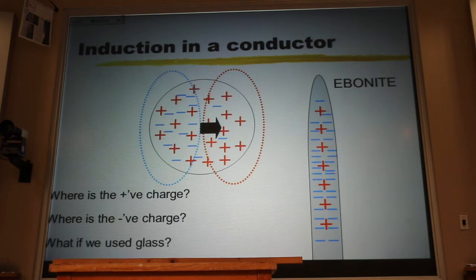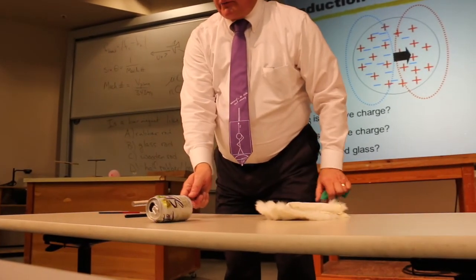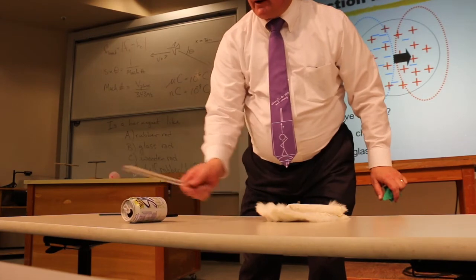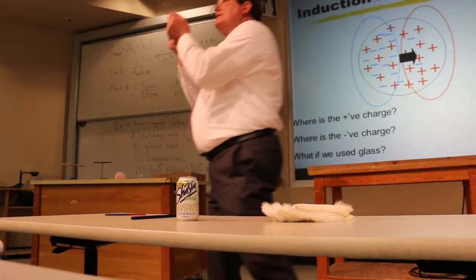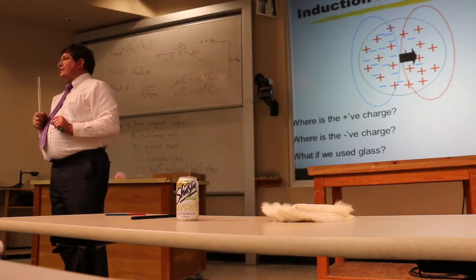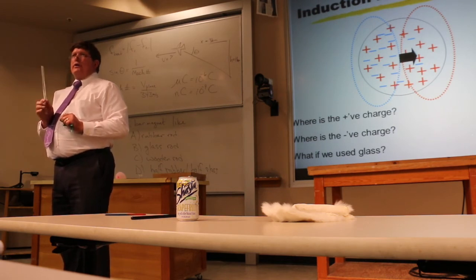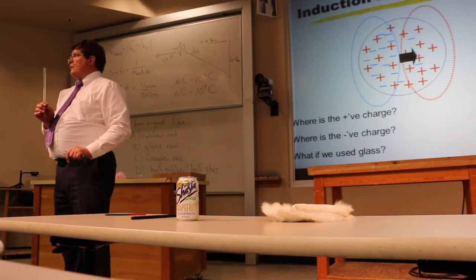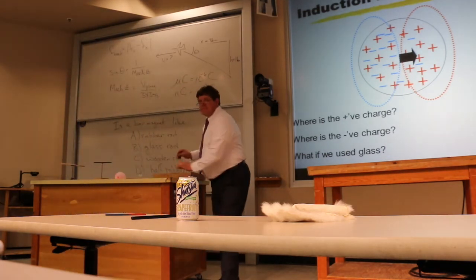Now what if I had used a glass rod instead? Well, you know what the answer is, I still get an attraction. But now, since it's the electrons that move, the electrons must be moving the opposite way that they were with the rubber rod. But still, the side that's closest to the rod is the attractive force and it dominates. You always get an attraction when you're dealing with a neutral object. Always. You never find a repulsion.